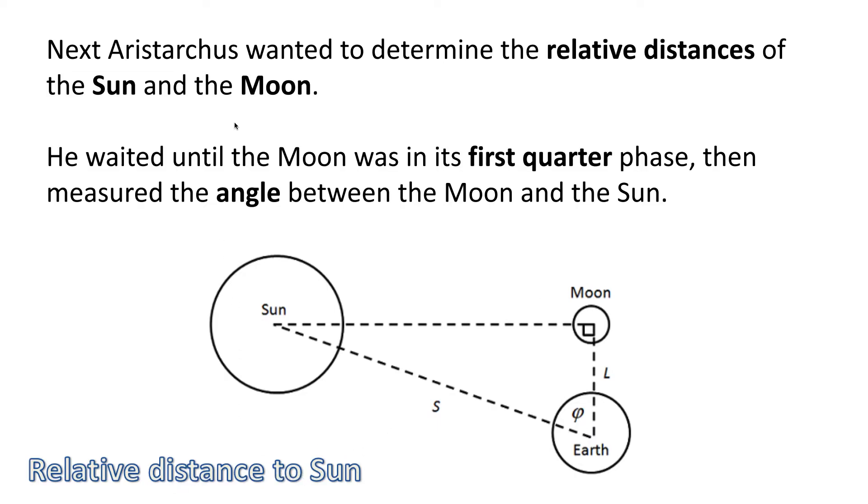Relative distance to the sun. Next, Aristarchus wanted to find the relative distance between the sun and the moon - how far away is the moon compared to how far away is the sun. He waited until the moon was in its first quarter, where it's at 90 degrees to the sun just like this.